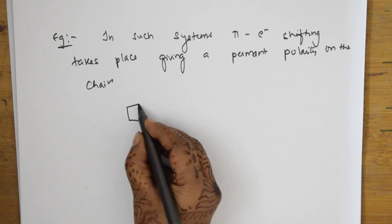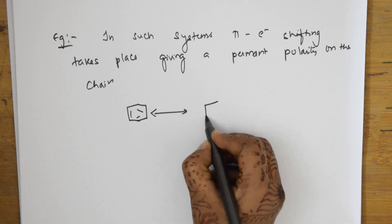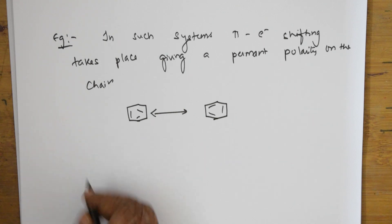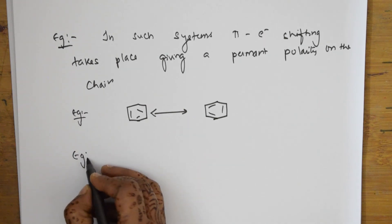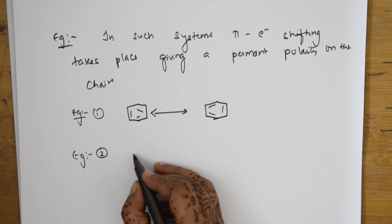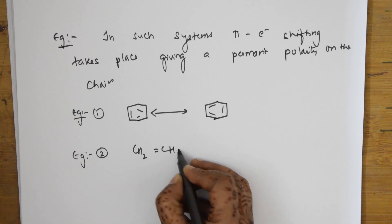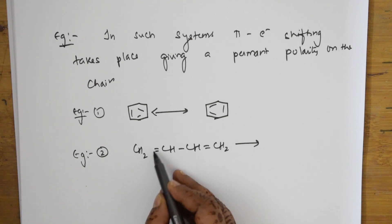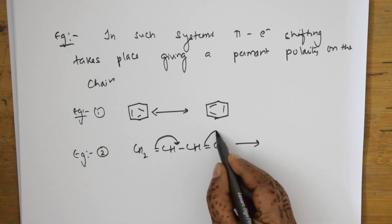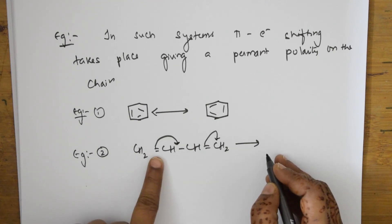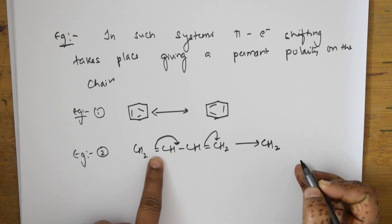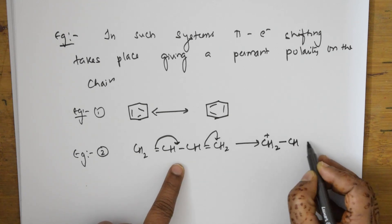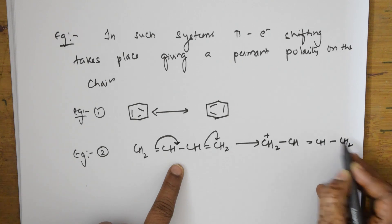Taking the example of 1,3-butadiene: CH₂=CH-CH=CH₂. When the electrons shift, the first carbon gains a positive charge and the last carbon gains a negative charge, giving: ⁺CH₂-CH=CH-CH₂⁻. It can go the other way also: ⁻CH₂-CH=CH-CH₂⁺, where the electrons shift in the opposite direction.